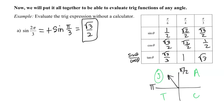So just one more time: I need to know the quadrant, I need to know the sign — whether it's positive or negative — based on all star trig class, and then I need to know the value from the table that I constructed from memory.